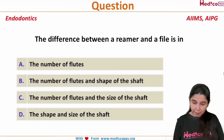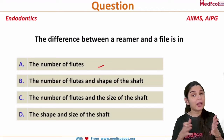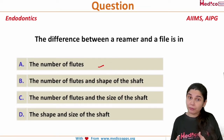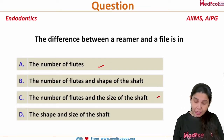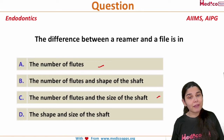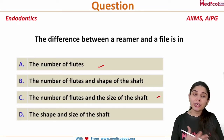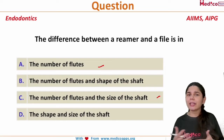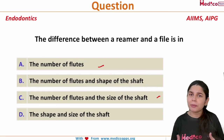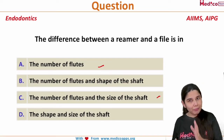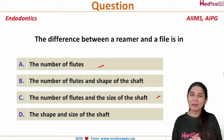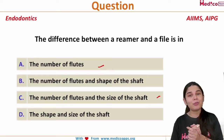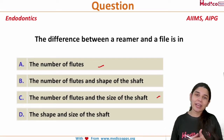So let's see the options. Option A is number of fluids. Option B is the difference between number of fluids and shape of the shaft. Option C is number of fluids and size of the shaft. And lastly, option D is shape and size of the shaft. All four options look quite similar to each other, but we will resolve this by eliminating options and getting the right answer.